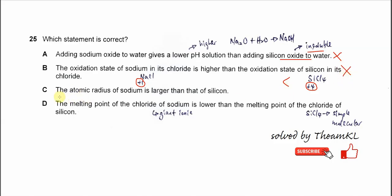C. The atomic radius of sodium is larger than silicon. This is correct because we know that across a period, the proton number increases and the shielding is almost constant.